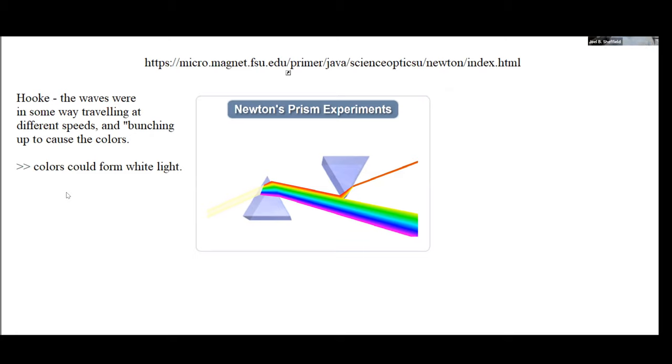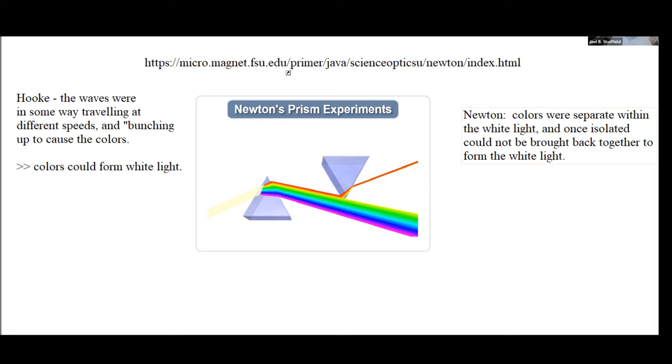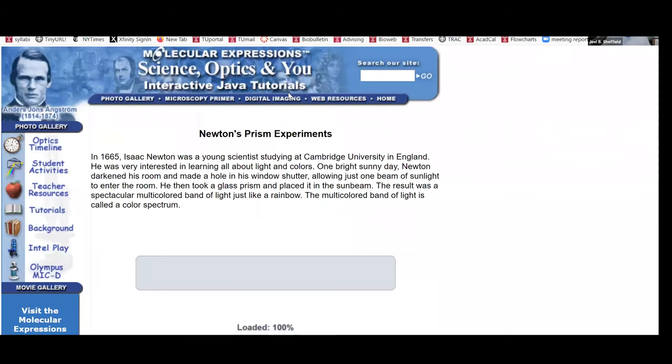On the other hand, Newton had a very different point of view. Newton, who believed, who set up that the colors were separate within the white light and once isolated could not be brought back together to form white. And so this led to a real experiment that he was able to do. Let me show you now that experiment, which is really remarkable as a definitive experiment. It's a wonderful example of it.